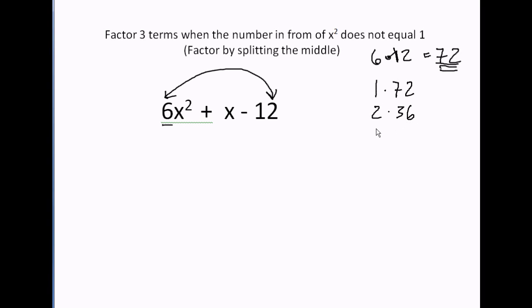2 times 36 is 72. 4 times 18 is 72. 6 times 12 is 72. We're missing one. 3 times 24. That's also 72. And what about 8 times 9?